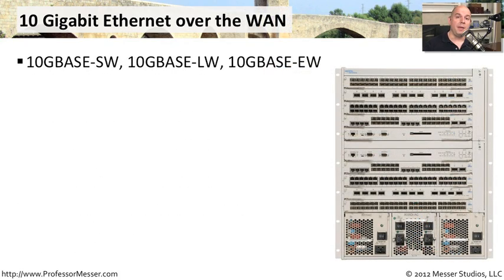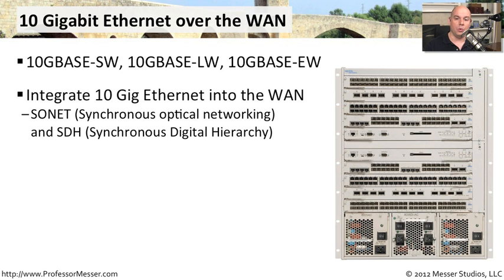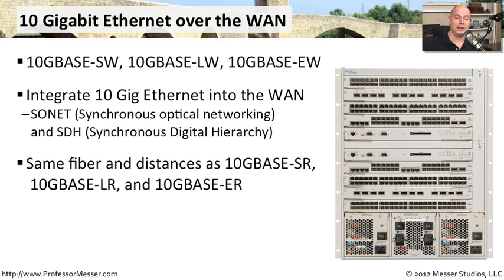If you're a service provider providing 10GB Ethernet over a wide area network, there are three types: 10GBaseSW, LW, and EW — short, long, and extended versions over the WAN. These integrate 10GB Ethernet with a SONET or SDH link, using the same fibers, connectors, and distances as 10GBaseSR, 10GBaseLR, and 10GBaseER respectively.